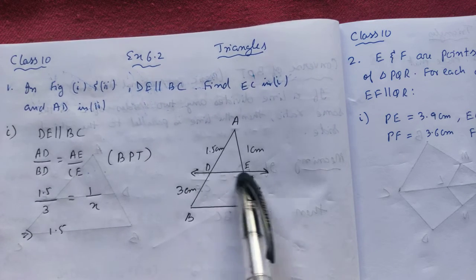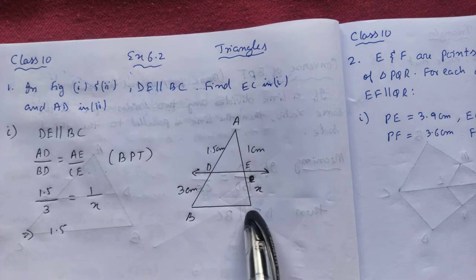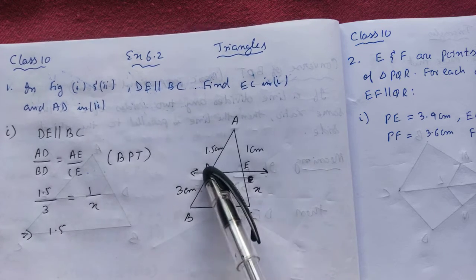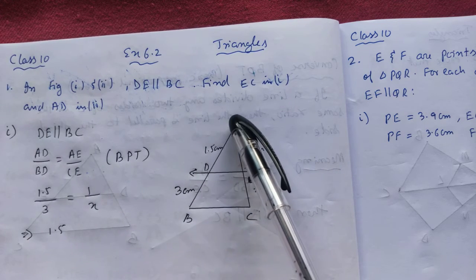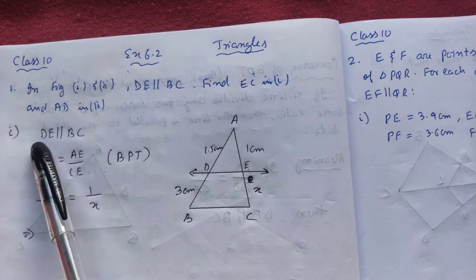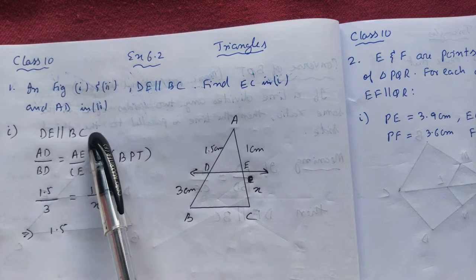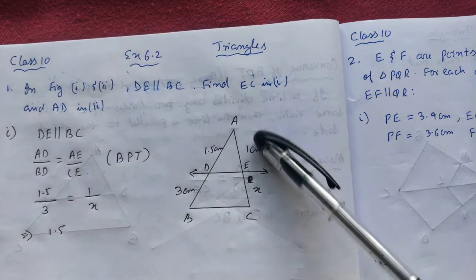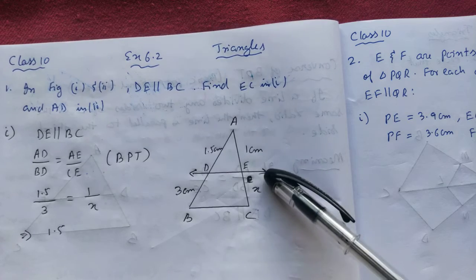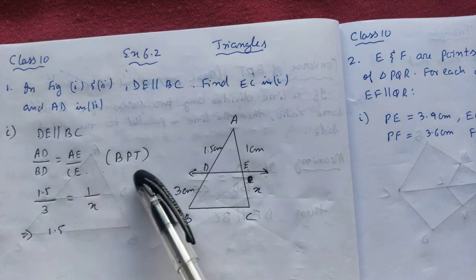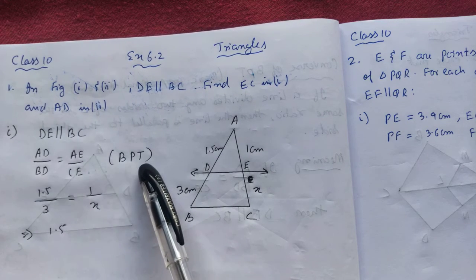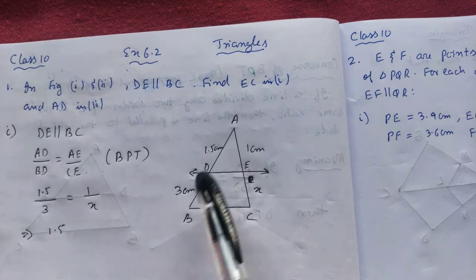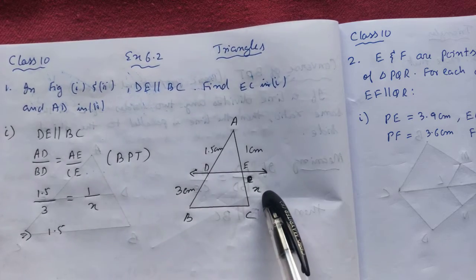If the lines are parallel, then the sides divide in the same ratio. Since DE and BC are parallel, that means we can write AD/BD = AE/CE. The reason is the Basic Proportional Theorem — if the lines are parallel, we can write this ratio: this by this equals this by this.